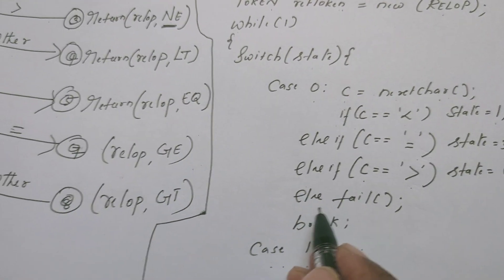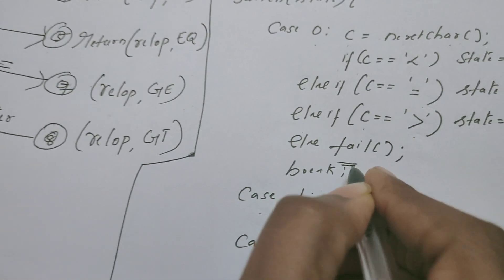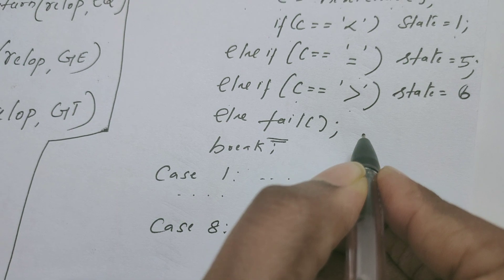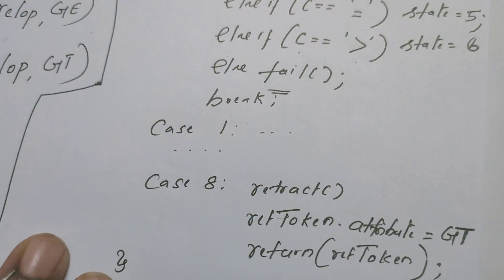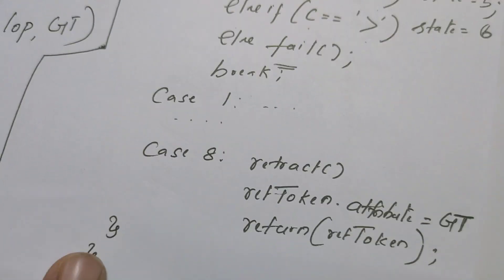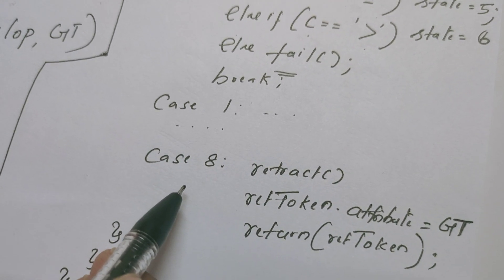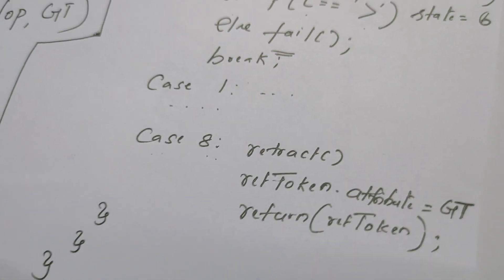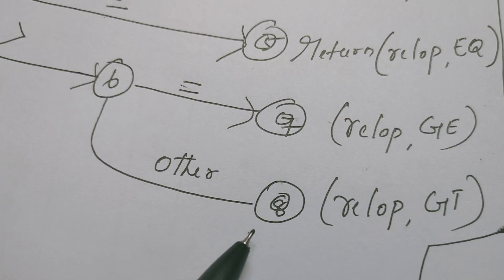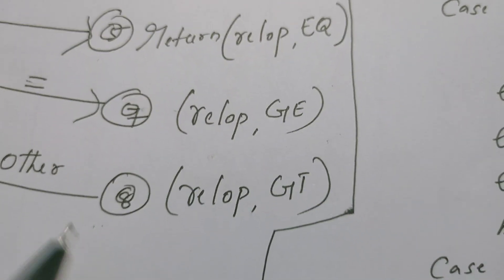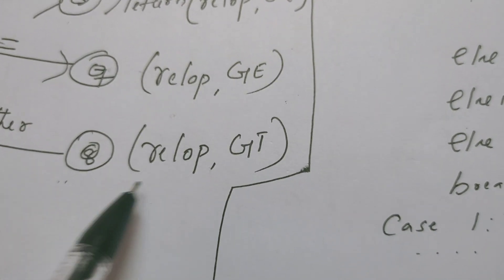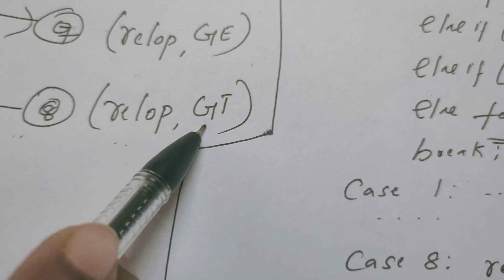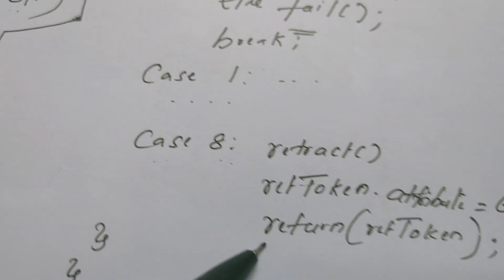Fail means when this function is invoked, if the read lexeme is not a relational operator. We can write case 1, case 2, case 3 and so on. Case 8 means we check state number 8 in the transition diagram. State 8 is one of the accepting states — it has to return the token with name relational operator and value greater than.